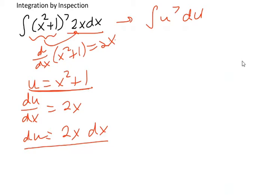So again, we had u right here, u to the 7th du. And that's a pretty simple integral. That just becomes u to the 8th over 8. That becomes x squared plus 1 to the 8th over 8.